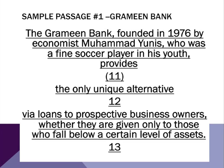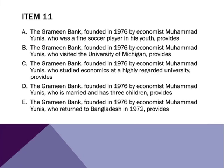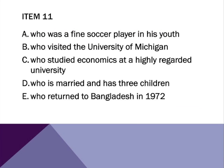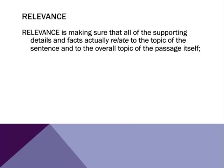Looking at the passage again — sample passage number one, the Grameen Bank — we're focusing on question number 11. We look at the question and the answer choices, and the choices themselves begin to tell us what we need to do. As you can see with these five choices, most of the answer choices are basically the same. So if you recall from our general test strategy, let's remove some of that information so we can focus on the parts we really need to look at. Relevance specifically is making sure that all of the supporting details and facts actually relate to the overall topic of the passage, and specifically to the topic of what we're reading in this particular part.